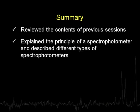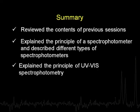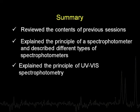Let us sum up what we have done today. We reviewed the contents of previous sessions, explained the principle of a spectrophotometer and its essential components, discussed single beam and double beam spectrophotometers, took up the principle of UV visible spectrophotometry including Beer's law, Lambert's law, and Beer-Lambert law, and then took up important applications. In the next session we will take up the correlation between structure and spectra - how we correlate the lambda max of a molecule with its structural components, the chromophore and other substituents, in a qualitative way to predict lambda max values.